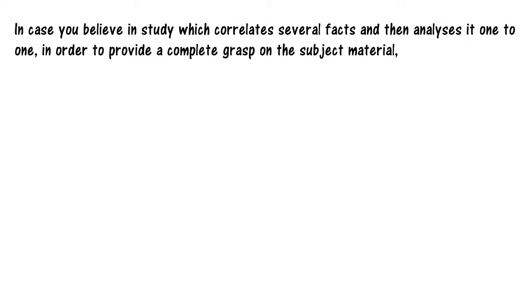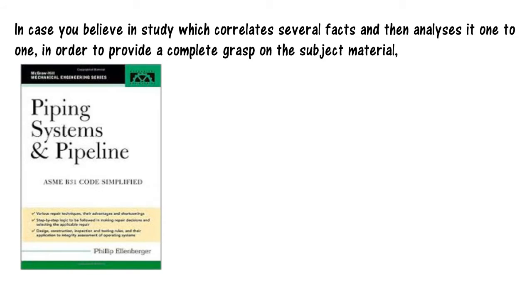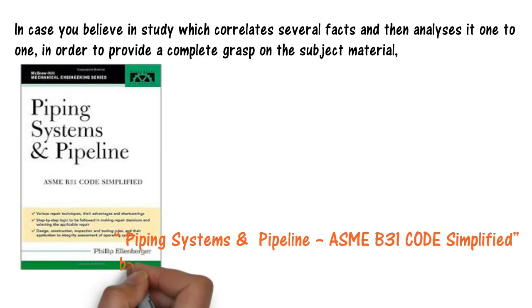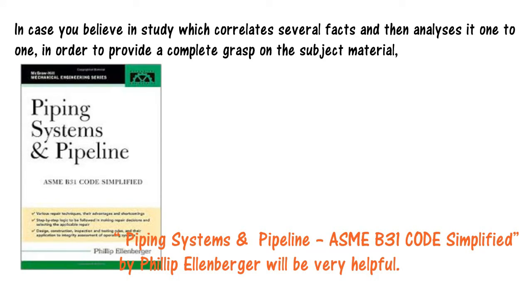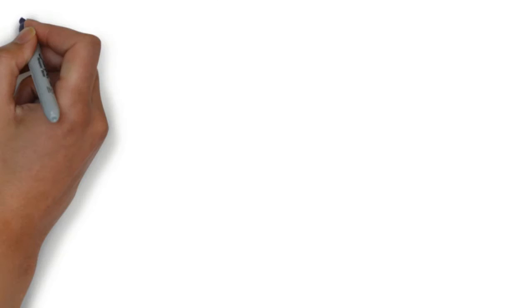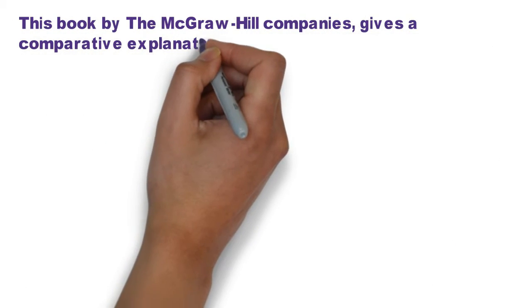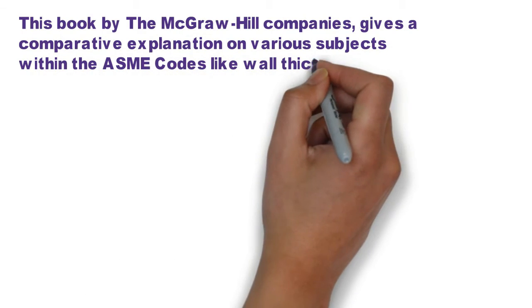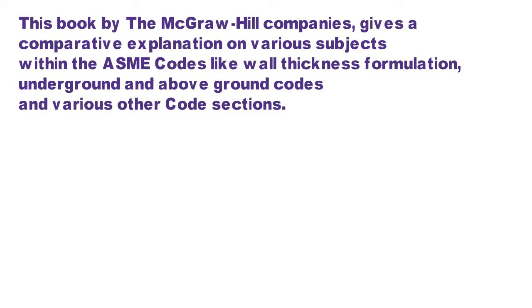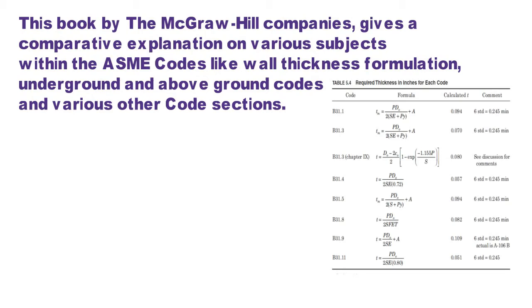Now, in case you believe in study which correlates several facts together and then analyzes it one to one in order to provide a complete grasp of the subject material, then in that case we do have another book. That's Piping Systems and Pipeline ASME B31 Code Simplified. It's by Philip Allenberg. This book is by TMH Companies and gives comparative explanation on various subjects within the ASME code like wall thickness formulations, underground and above ground codes and various other code sections.